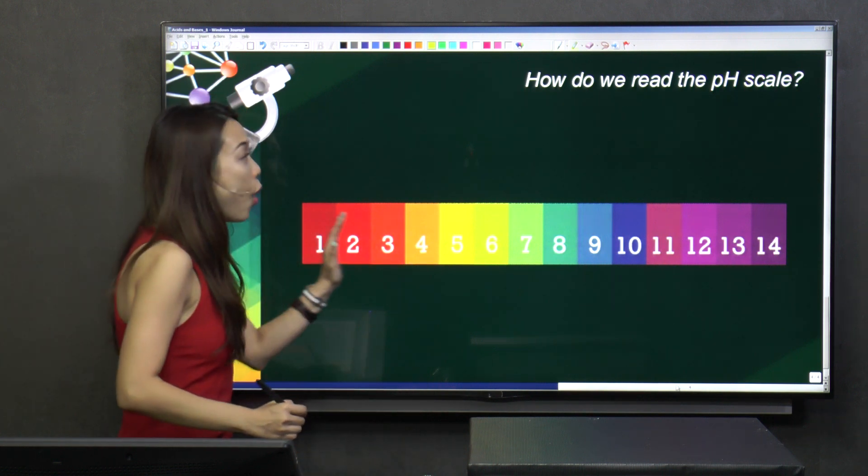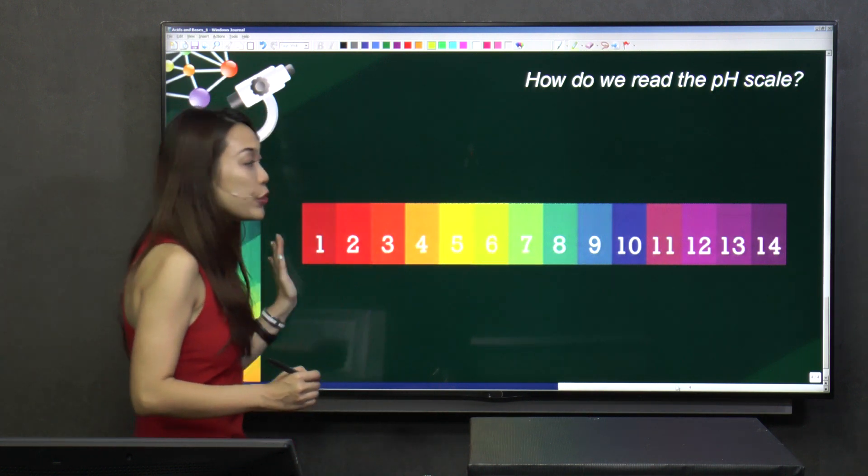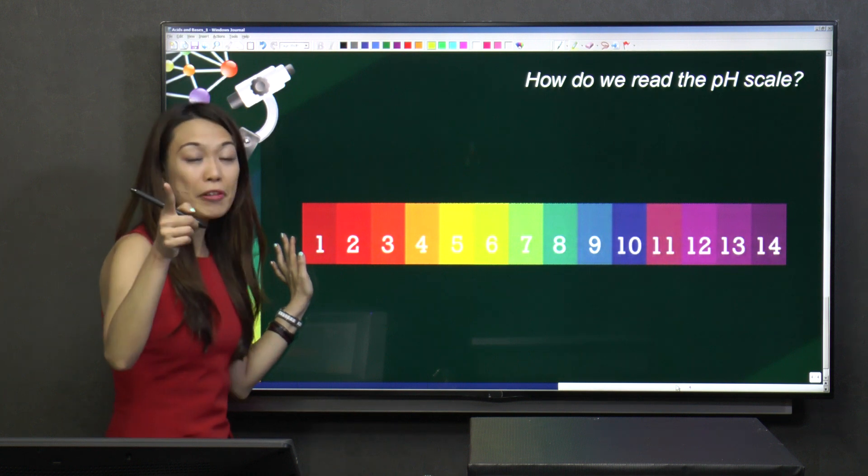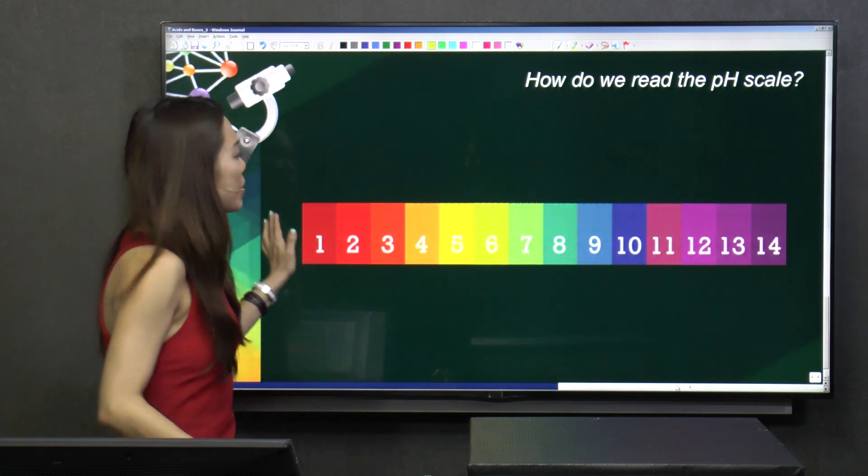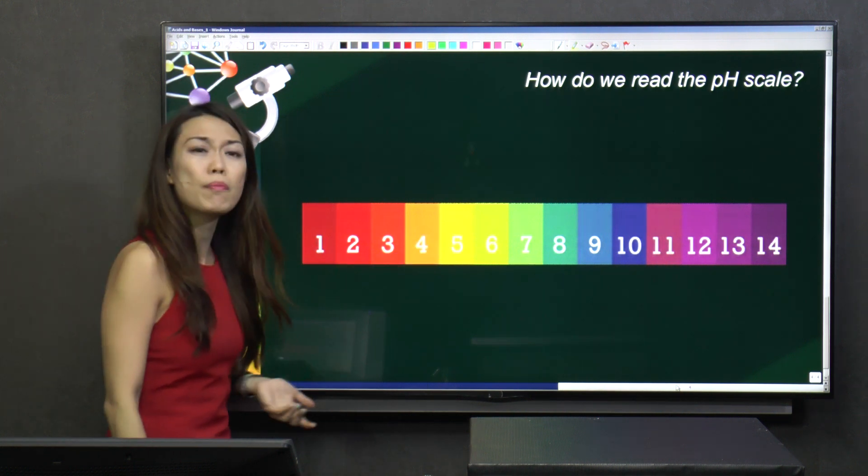This is the whole range of colour for Universal Indicator. Well, now your question will be, Miss Celina, so much colour, how to remember?